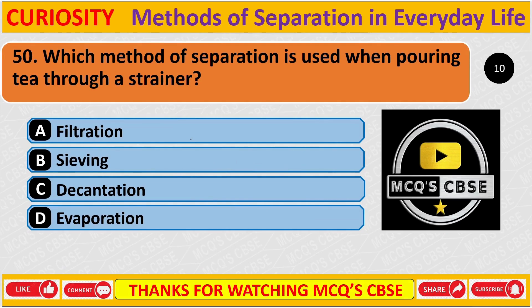Question: Which method of separation is used when pouring tea through a strainer? Correct answer is A: Filtration.